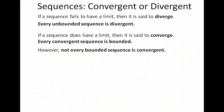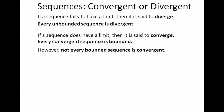Let's review a little bit of what we did. If a sequence fails to have a limit, then it's going to diverge. If it is unbounded, it's divergent. If a sequence does have a limit, then it is going to converge. Every convergent sequence is bounded. However, that statement doesn't work in reverse — just because a sequence is bounded doesn't mean that it's convergent.